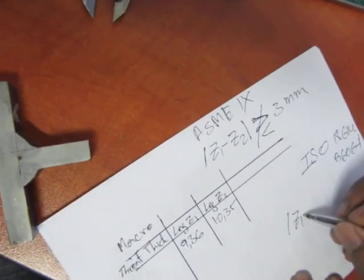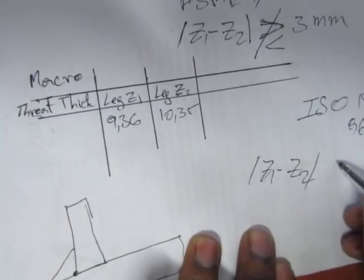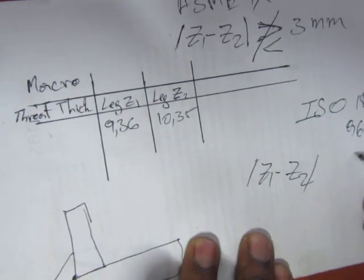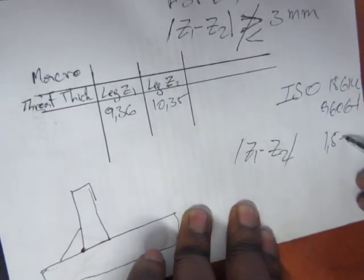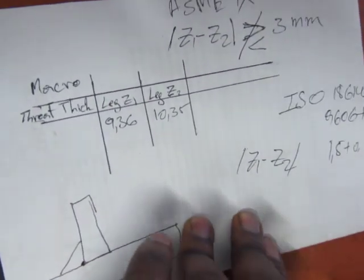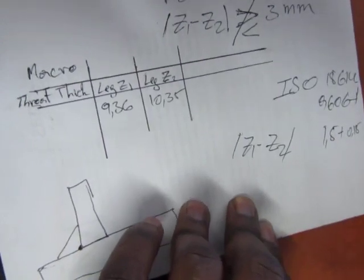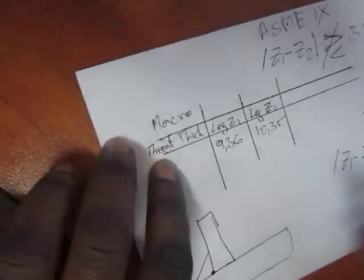The difference between the leg length must not be above the throat thickness, actually 1.5 plus 0.5 times the throat thickness. That is my throat thickness, from the root to here.